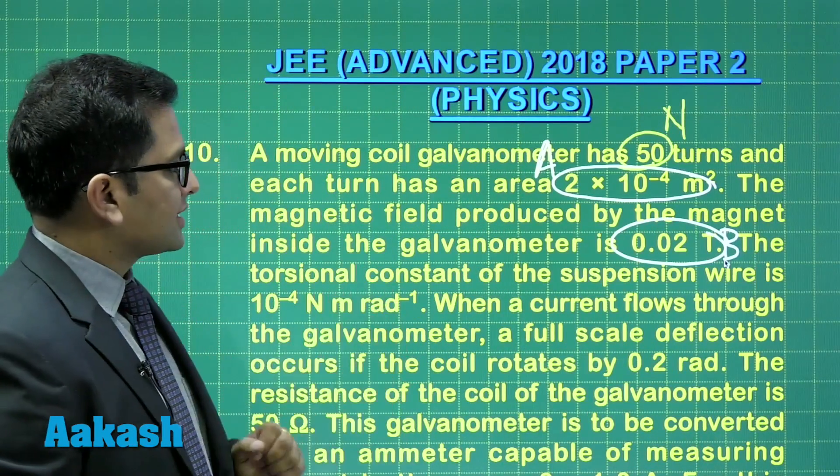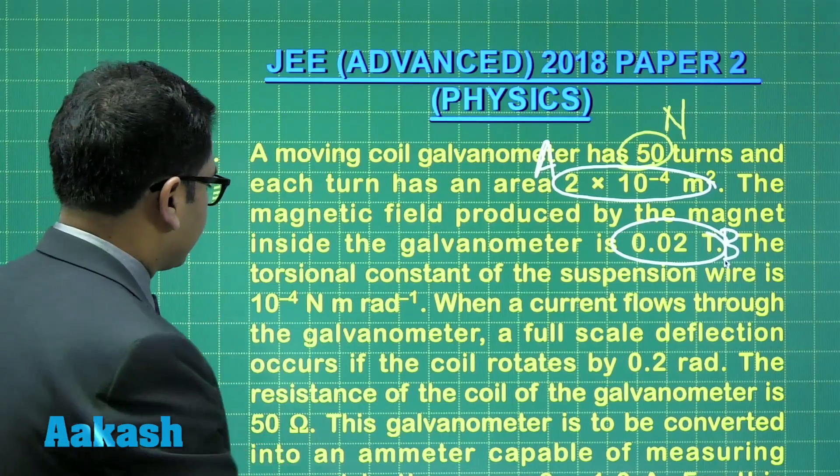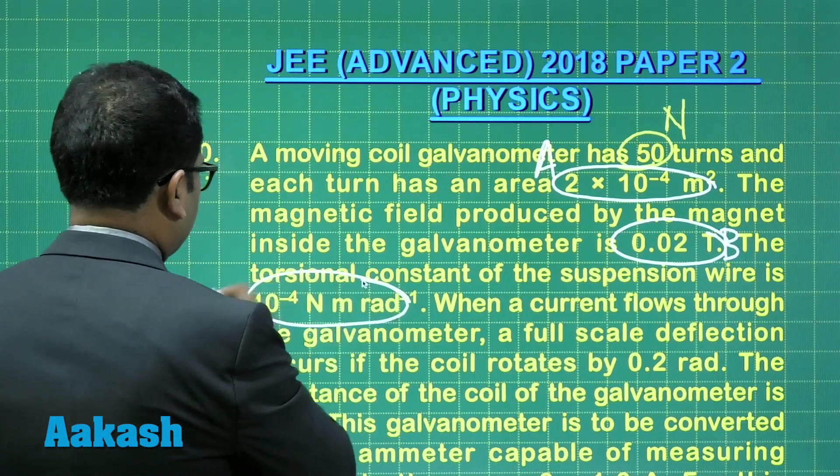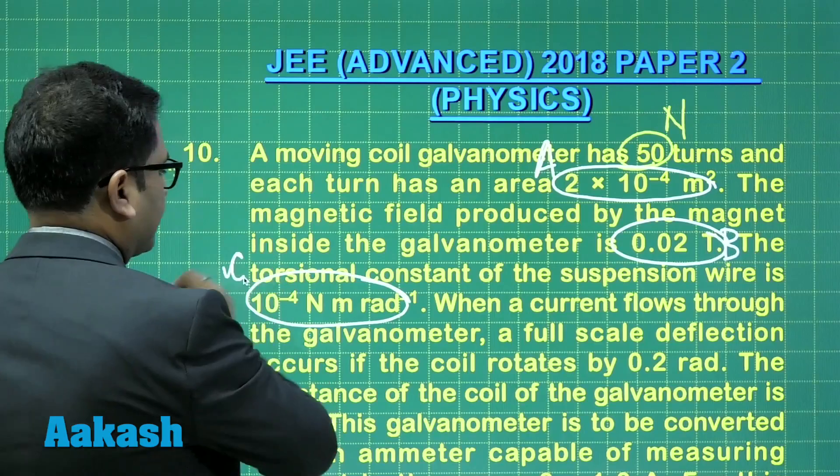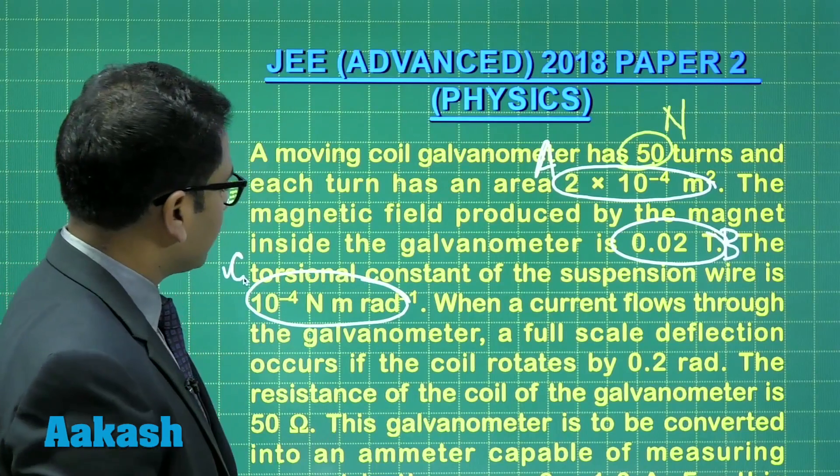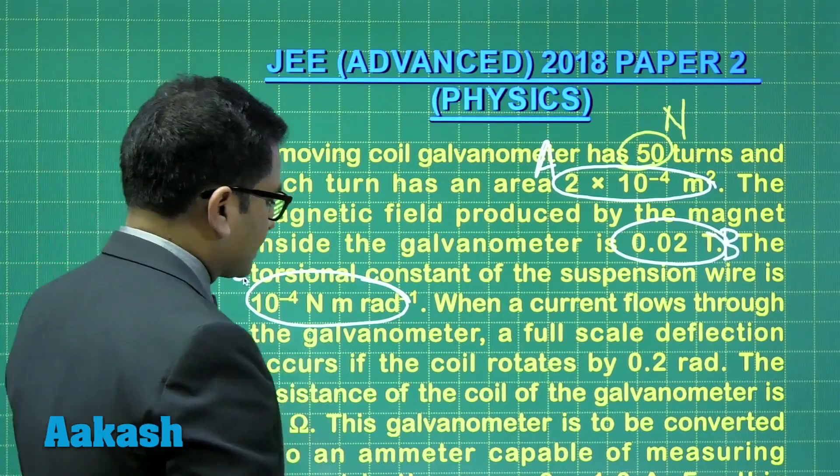The torsional constant of the suspension wire is given here, so let me represent the torsional constant by C. When a current flows through the galvanometer, a full-scale deflection occurs.